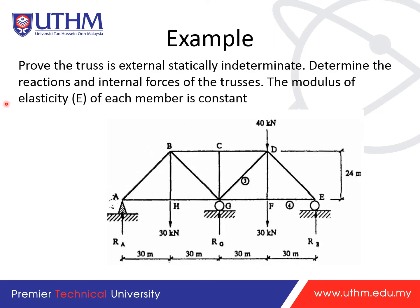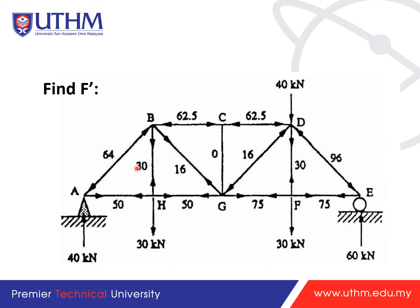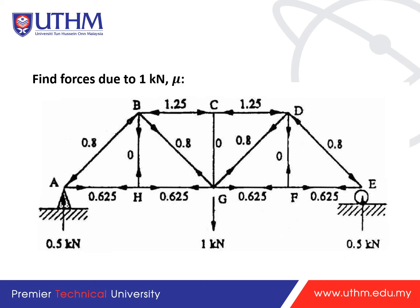In the worked example, we prove the truss is externally statically indeterminate, then determine reaction forces and internal member forces where the modulus of elasticity E is constant for each member. After removing support G and calculating support reactions (40 kN upward at one end, 60 kN upward at the other), we calculate all member forces using the method of sections. Then, a one-unit load is placed at G and support reactions at A and E are calculated, followed by computing all member forces.